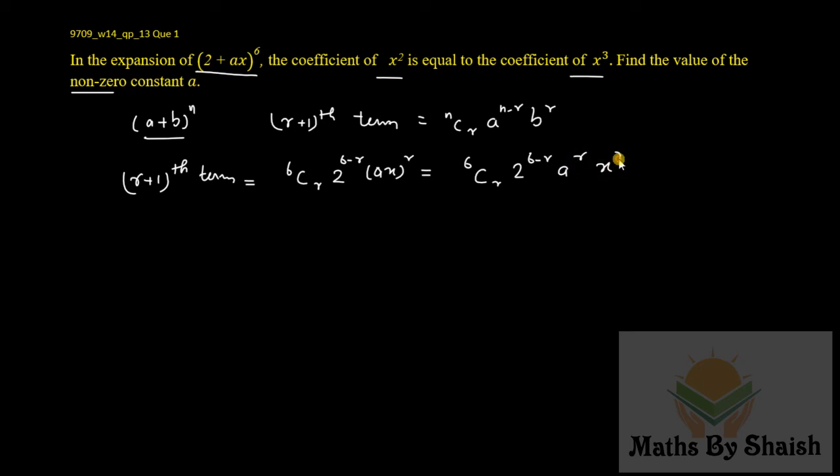Here now, for x² coefficient, r should be 2, and for x³ coefficient, r should be 3. And hence according to the question we got 6C2...